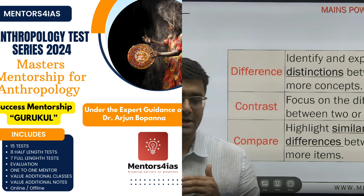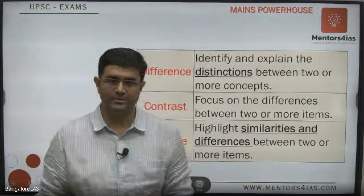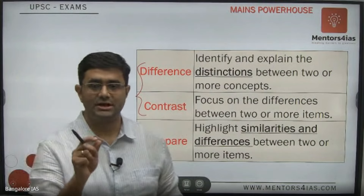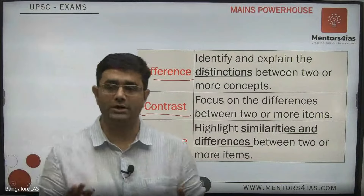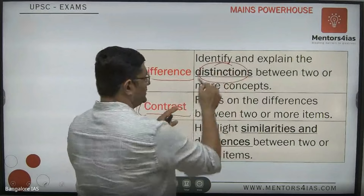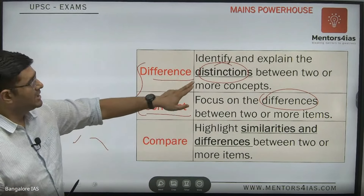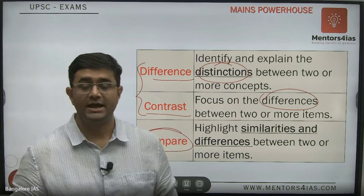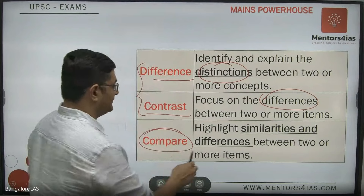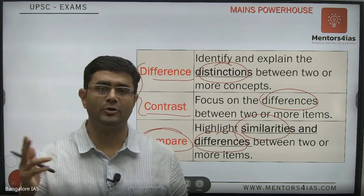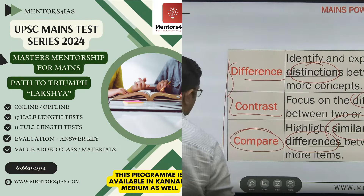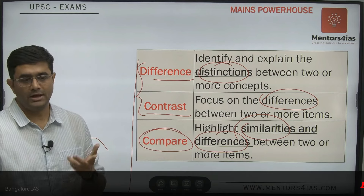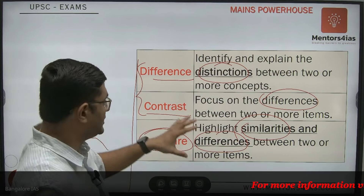The final set of keywords involves comparison between two topics. 'Difference' and 'contrast' are the same — you need to bring out the differences and distinguish between two topics. 'Compare,' however, is different — students often forget this — when asked to compare, you must write both the similarities as well as the differences between two or more topics. Students generally forget to write the similarities when 'compare' is asked and lose half their marks.